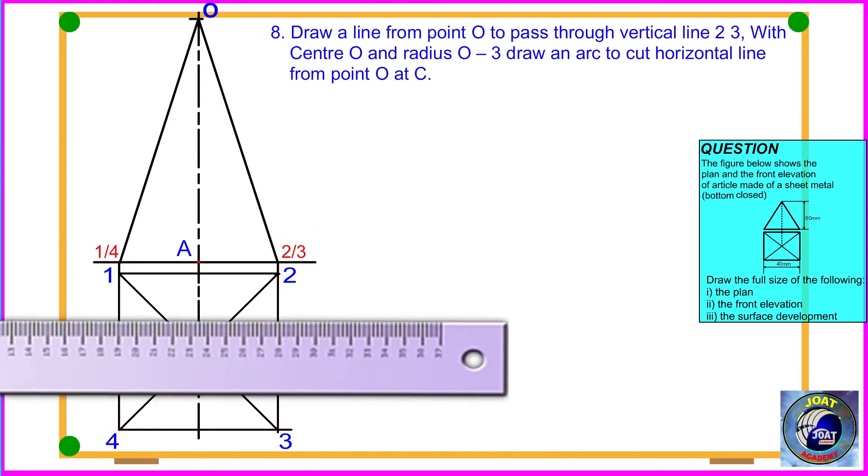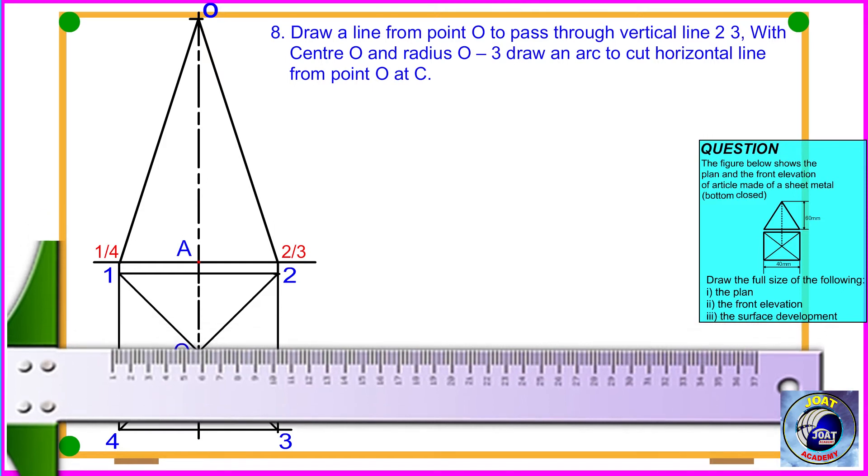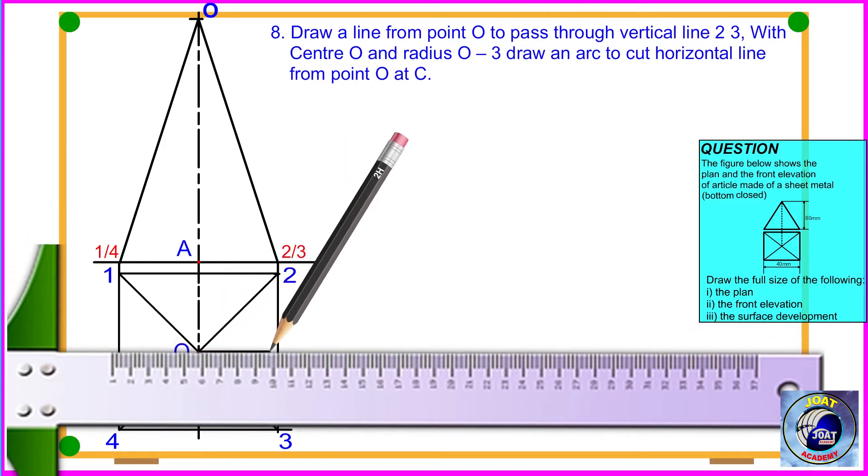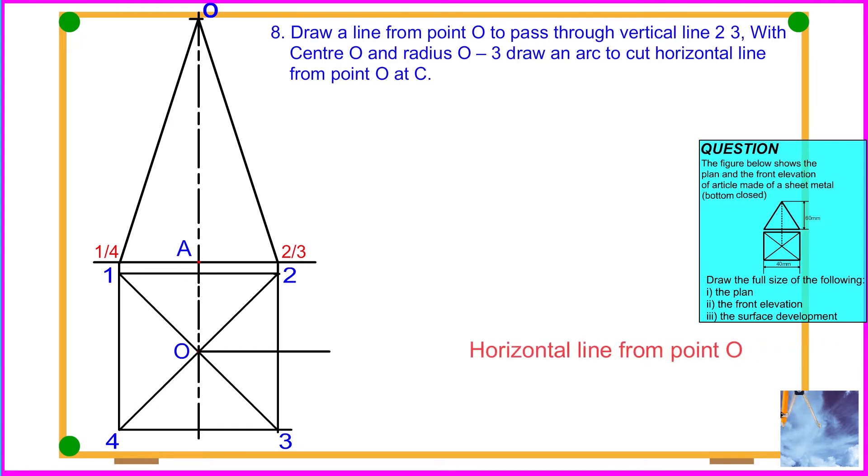Procedure 8: Draw a line from point O to pass through vertical line 2-3. With center O and radius O-3, draw an arc to cut the horizontal line from point O at C.